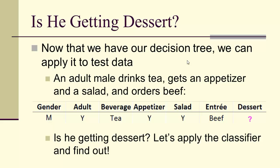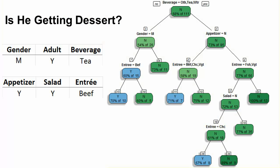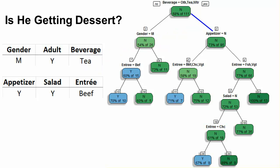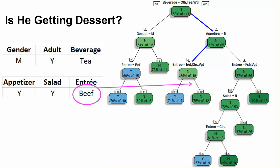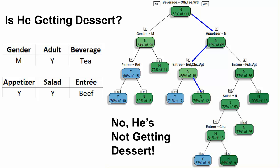Is this person getting dessert? An adult male drinks tea, gets an appetizer and a salad, and orders beef. Tea corresponds to beverage equals other, tea, or water — so we start on the true side. The appetizer is yes, so appetizer equals no is false. They did get beef, so we go in the true direction for beef. We end at a leaf node classified as no — he did not get dessert.